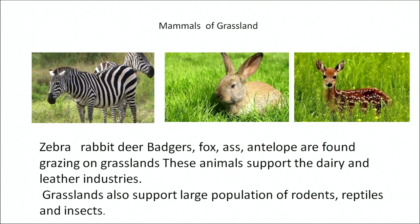Zebras, rabbits, beavers, fox and antelope are found as grazers in the grasslands. These animals support the dairy and leather industry worldwide. The grasslands also support large populations of reptiles, rodents and insects.